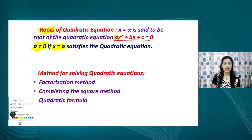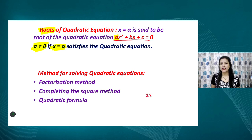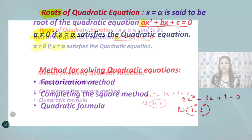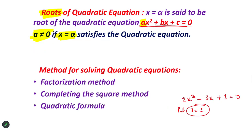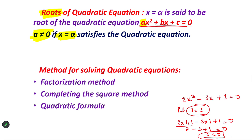Let us see a small example. Take the equation 2x² − 3x + 1 = 0. As we can see, the highest degree is 2, so this is quadratic. Now, is x = 1 a solution of this equation? In place of x, we put 1: it becomes 2(1)(1) − 3(1) + 1, giving us 2 − 3 + 1. We can see that both left and right sides equal 0. Therefore, x = 1 is a root of the given quadratic equation.